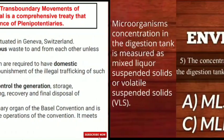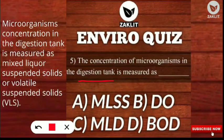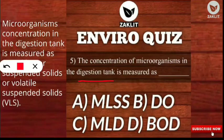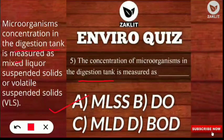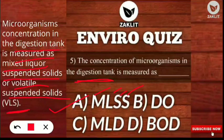The fifth question: the concentration of microorganisms in the digestion tank is measured as what? The options are MLSS, DO, BOD, or MLD. The correct option is A — MLSS. The full form is Mixed Liquor Suspended Solids. In another form it is measured as Volatile Suspended Solids (VSS). These two are the measured criteria for microorganisms in the digestion tank.